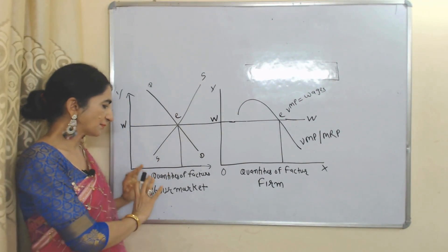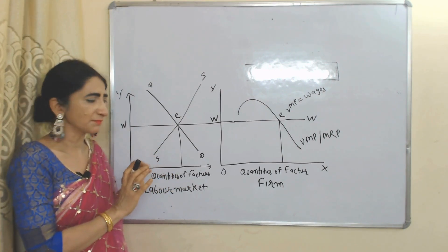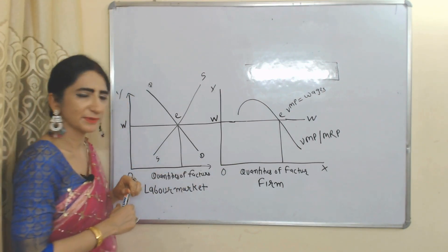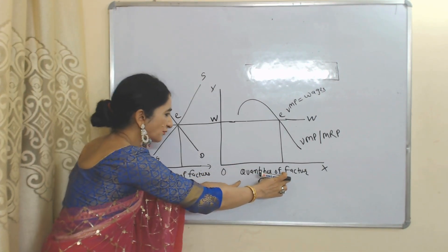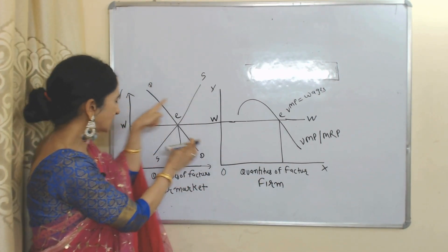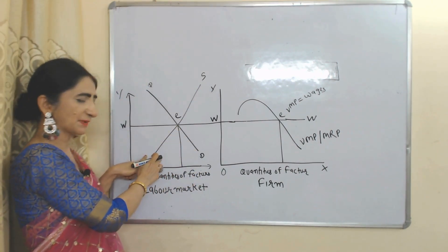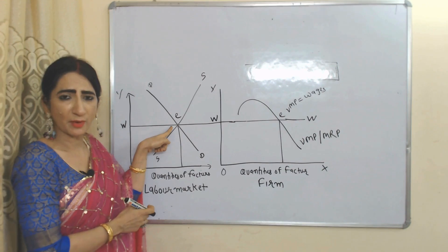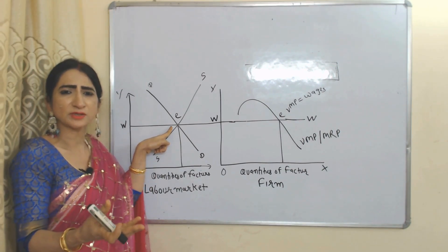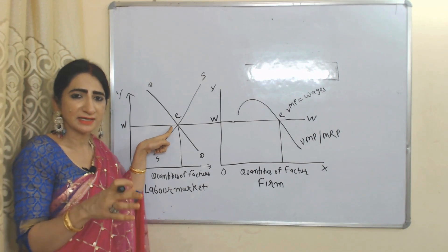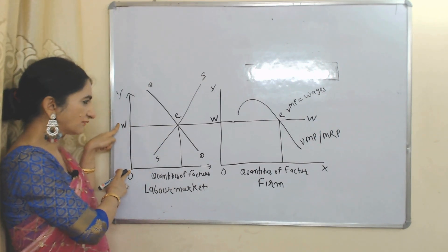Now we will see the diagrams. Here we have two diagrams. The first diagram represents the labor market — our main input is labor, so we are taking the labor market. The second diagram represents a firm. On the x-axis we have quantities of factor; on the y-axis we have wage rate. DD is the demand for labor; SS is the supply of labor. E is called the equilibrium point because wages are determined by the intersection of demand and supply. OW is the equilibrium wage.